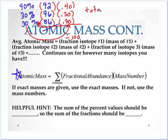I went from a total equal to 100 to a total equal to one, and we usually call that a fraction. We're going to talk about the fraction of isotope one times its mass.